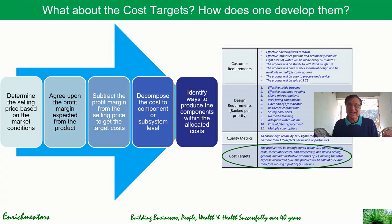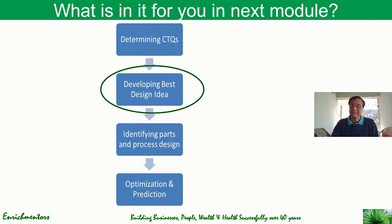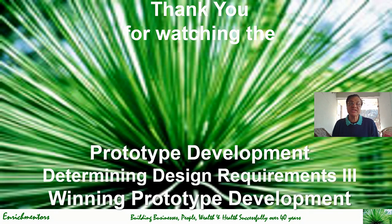Having determined the design requirements including cost targets, we are now in a good position to start developing the best design idea, which we will look at in the next module. Before that, you will have an assignment on how to determine design requirements using the House of Quality process. Share your answers and work with me and I'll be happy to give you feedback. Thank you for watching the third and final lecture of this section on determining design requirements — I hope you continue to enjoy and learn. I look forward to seeing you in the next section.